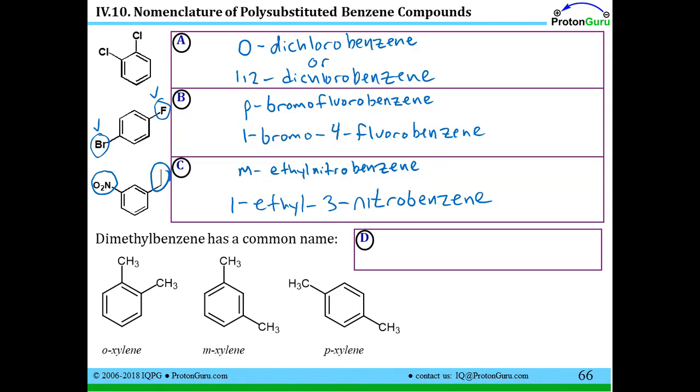Now when we learned about naming monosubstituted benzene compounds, we saw that there were several that had common names. There are also a large number of polysubstituted benzene compounds that have common names. But here I'm just going to ask you to know one of these. And that's the case where you have two methyl groups on the benzene, whether those are ortho, meta, or para to each other. These compounds are all called xylene.